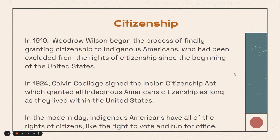In 1919, Woodrow Wilson began the process of granting citizenship to Indigenous Americans, who had been excluded from the rights of citizenship since the beginning of the United States and often treated as foreign entities — beginning with veterans of wars. Then in 1924, Calvin Coolidge signed the Indian Citizenship Act, which granted all Indigenous Americans citizenship as long as they lived within the United States. In the modern day, Indigenous Americans have all the rights of citizens, like the right to vote and run for office. In fact, our Secretary of the Interior is an Indigenous American.